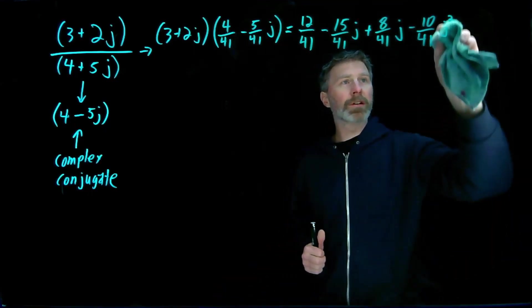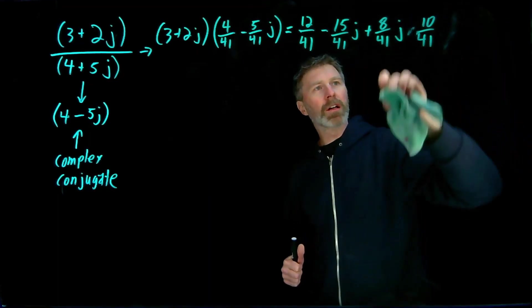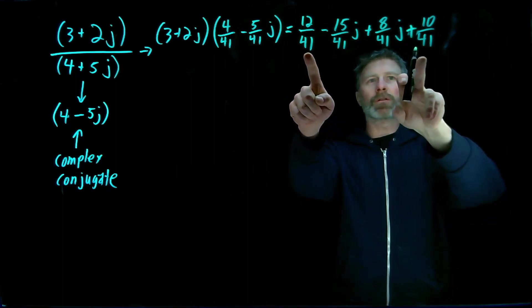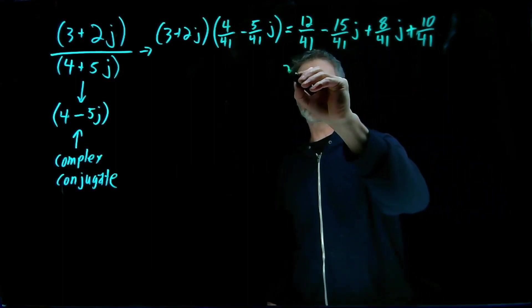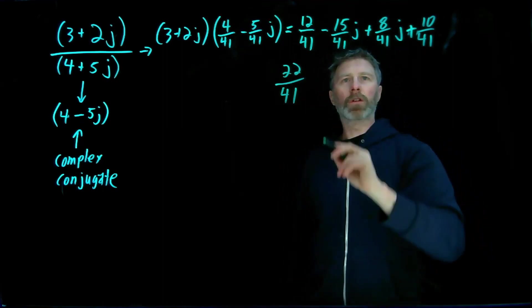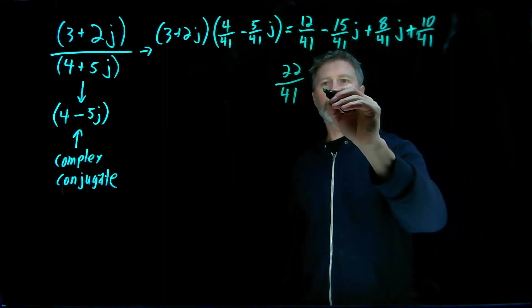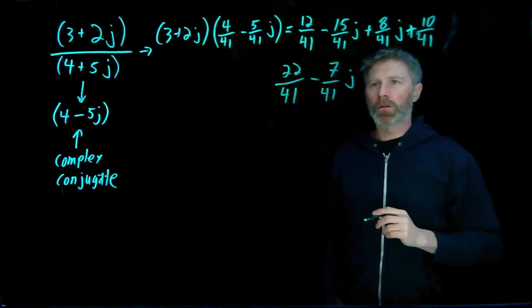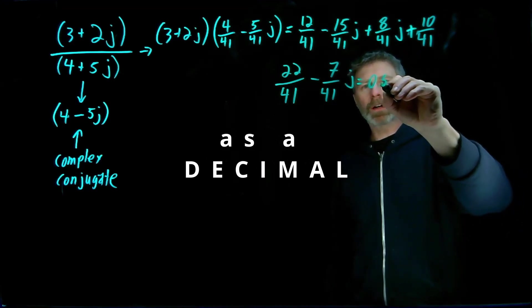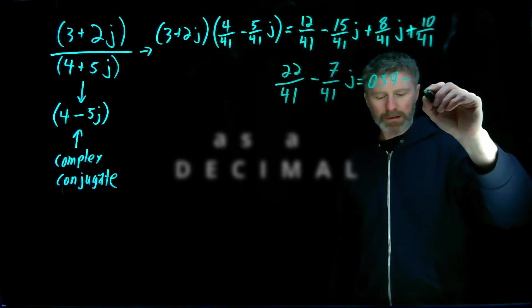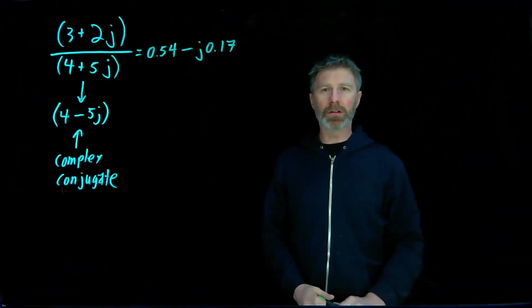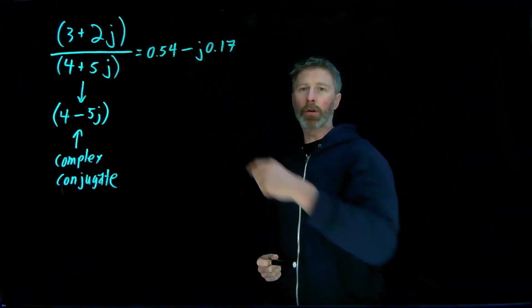So again, j squared is minus 1, so this term becomes plus 10 over 41. So my real parts are 12 over 41 and 10 over 41, so that gives me 22 over 41. And I've got minus 15 over 41j plus 8 over 41j, minus 7 over 41j. And writing these out as a fraction, I get 0.54 minus 0.17j. So that was a lot of work to do division when the numbers are in rectangular form like this.